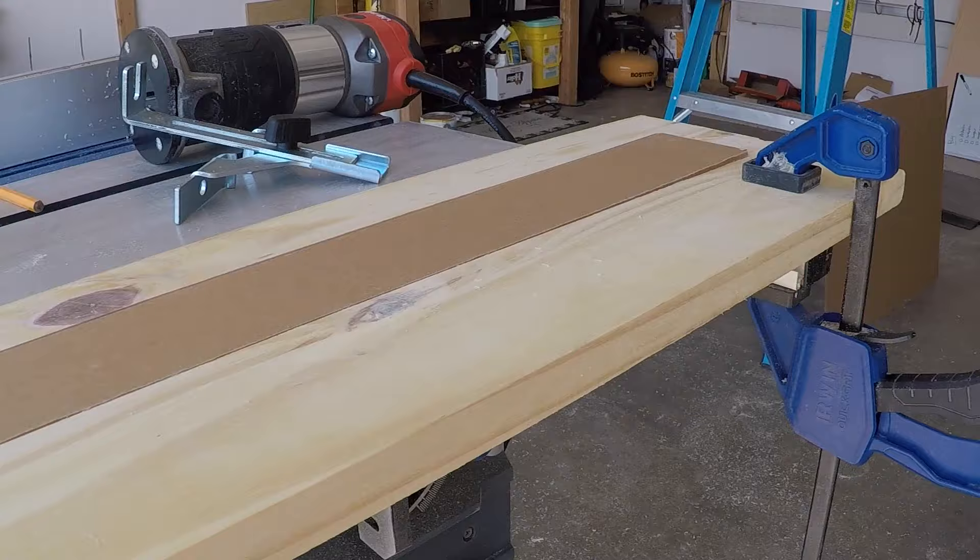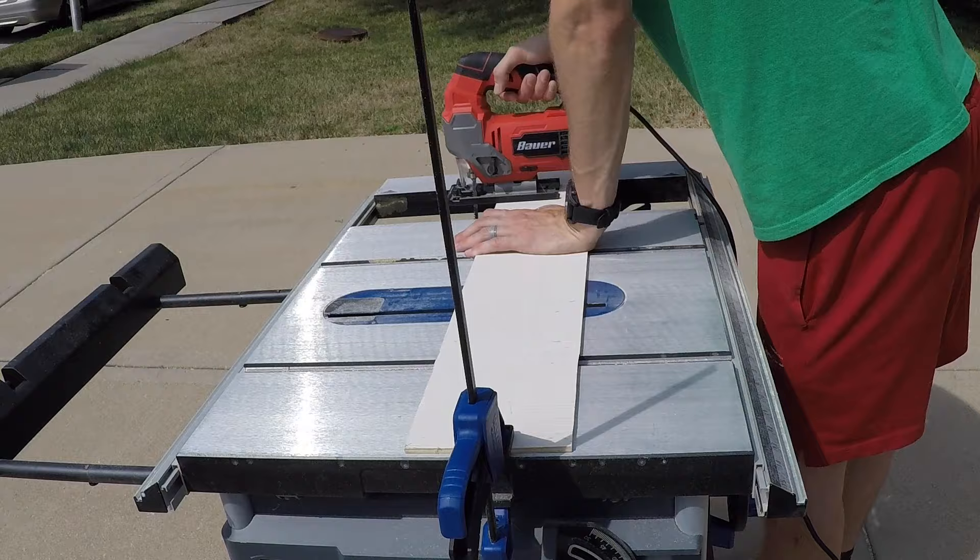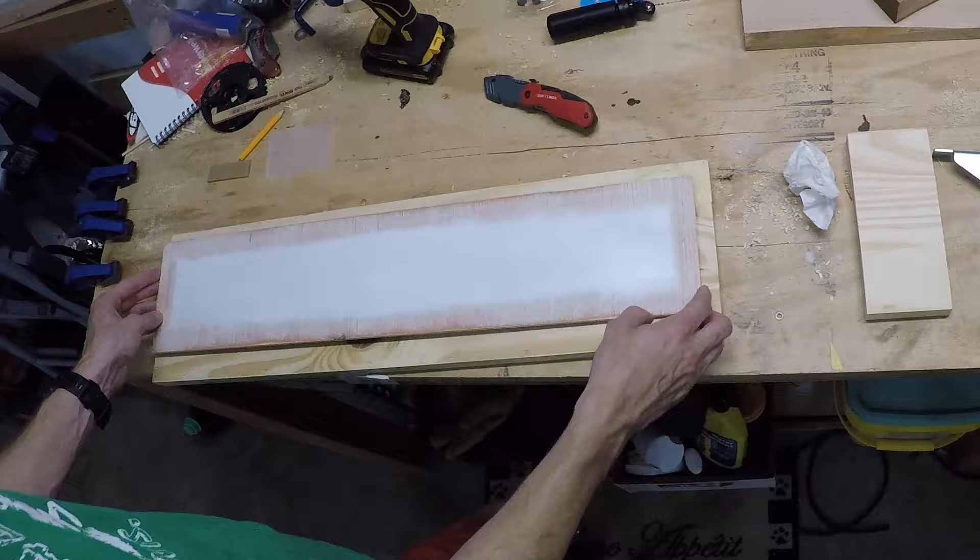So underneath that window we need something for the LEDs to rest on, so I'm going to cut this 16th inch flooring plywood and then spray paint it white. I realized after the fact that the wood glue would not stick very well to the painted surface, so I had to go back and sand down the edges. Once that's done though, I'll glue it and clamp it into place to dry.